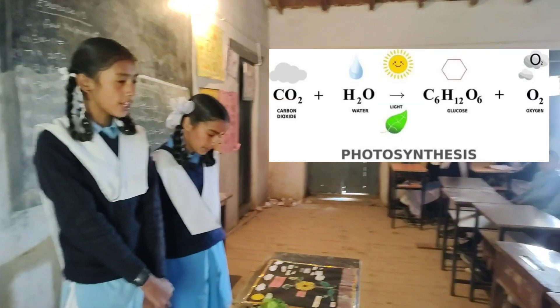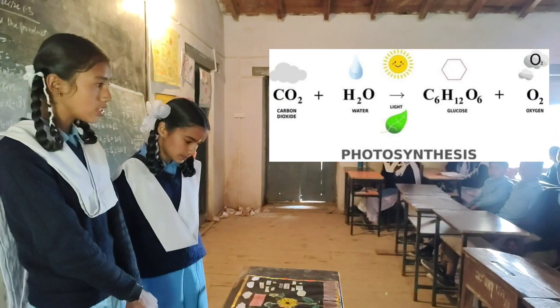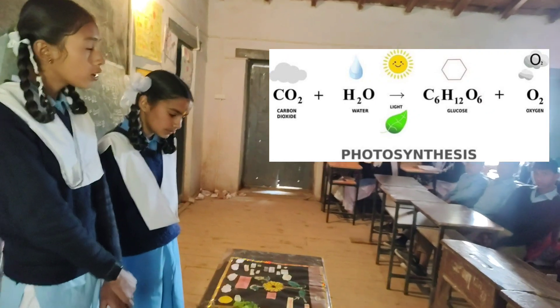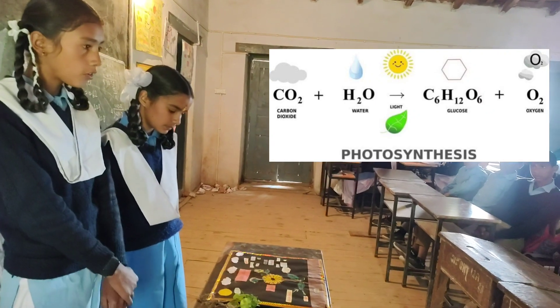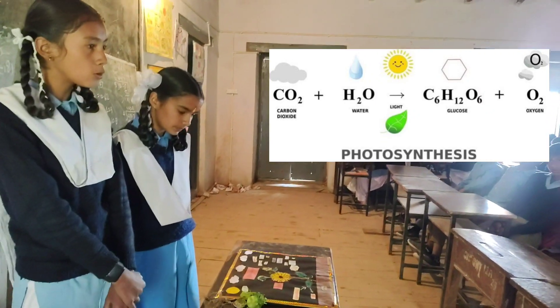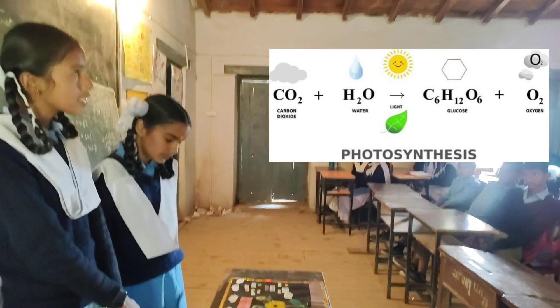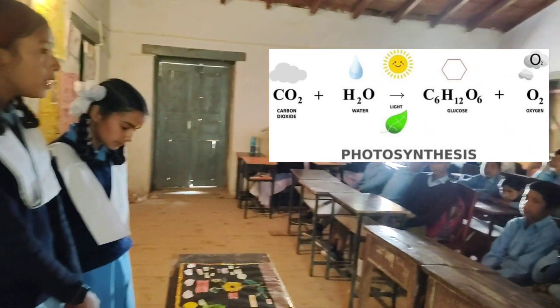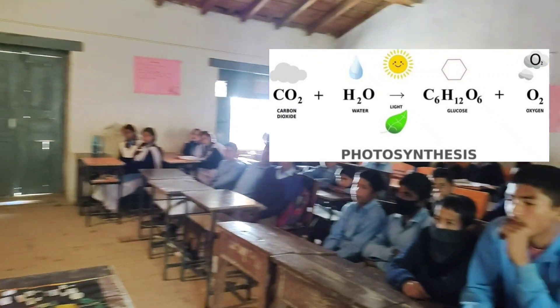Carbon dioxide plus water — CO2 plus H2O — in the presence of sunlight and chlorophyll, it will produce glucose: C6H12O6 plus oxygen O2.